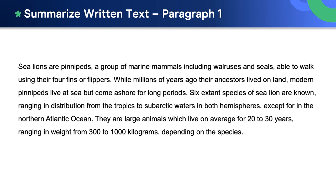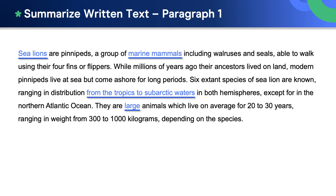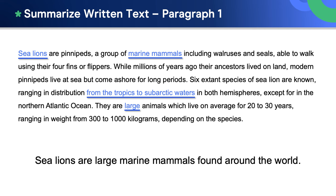Let's have a closer look at the first paragraph. I'm going to show you what I think are the key words. Here they are: sea lions, marine mammals, from the tropics to subarctic waters, and large. Now let's use these words to reduce the first paragraph down to one simple sentence: sea lions are large marine mammals found around the world.